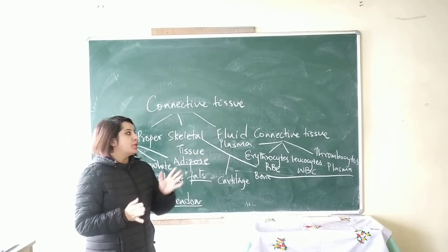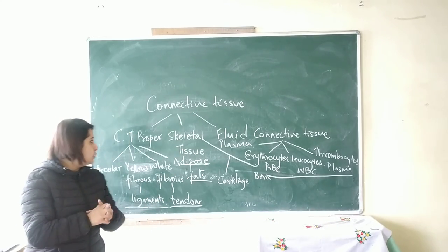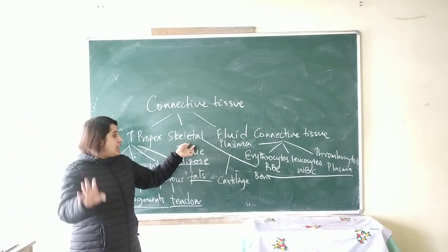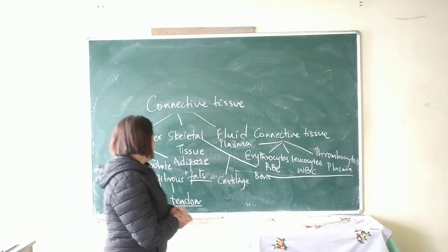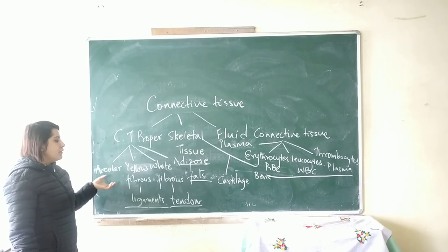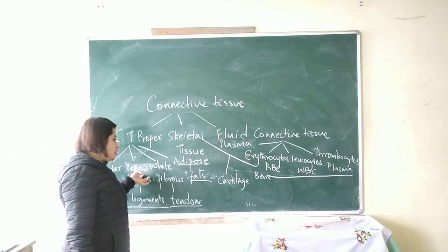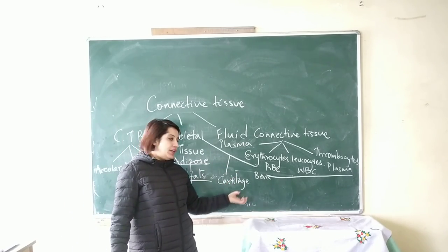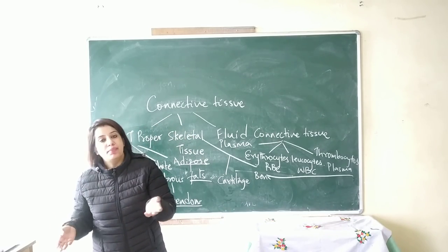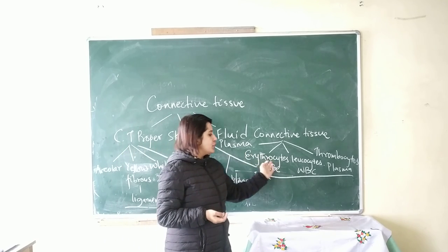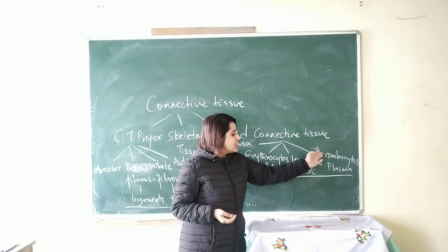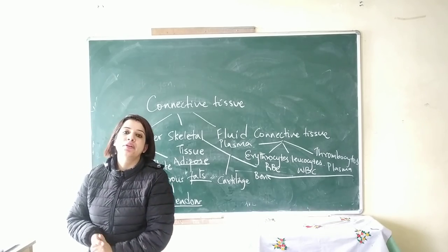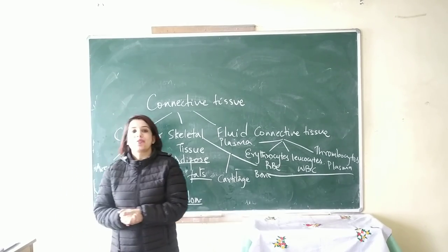So I hope you all understood what we did today. We covered nervous tissue and connective tissue. Connective tissue is divided into 3 types: connective tissue proper, skeletal tissue, and fluid connective tissue. Connective tissue proper is further divided into 4 types: areolar tissue, yellow fibrous tissue, white fibrous tissue, and adipose tissue. Skeletal tissue includes cartilage and bone. Fluid connective tissue is blood, consisting of erythrocytes, leukocytes, thrombocytes, and plasma. Keep watching my videos — please like and subscribe. Thank you everyone.